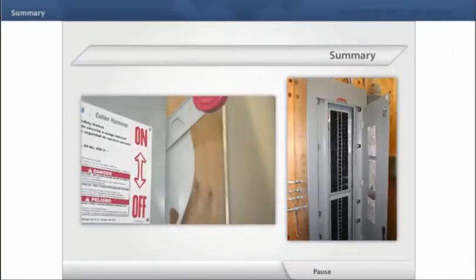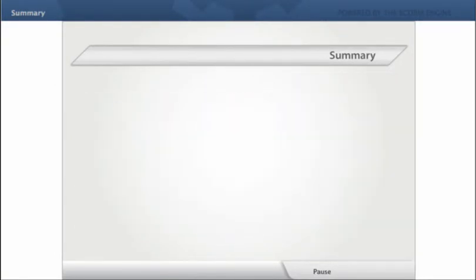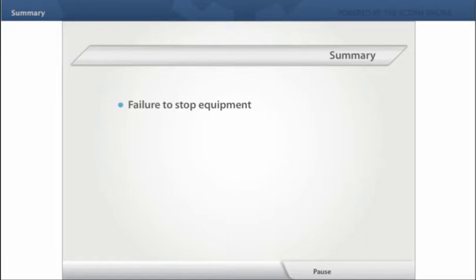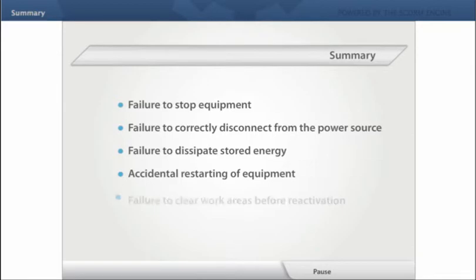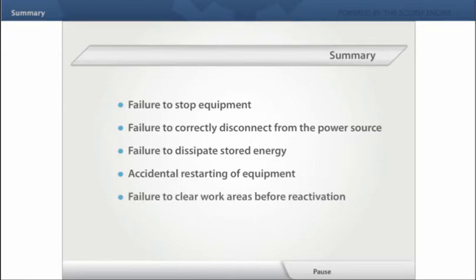Most lockout injuries and fatalities can be traced to one or more of the following causes: failure to stop equipment, failure to correctly disconnect from the power source, failure to dissipate stored energy, accidental restarting of equipment, and failure to clear work areas before reactivation.